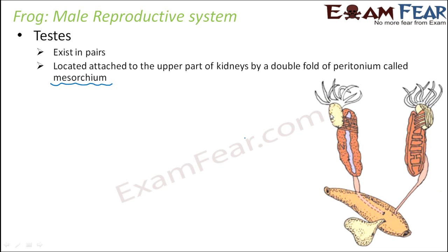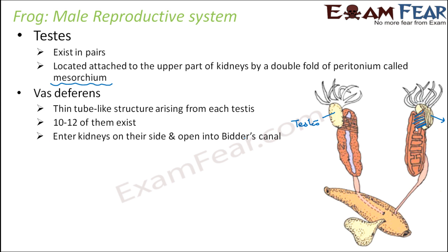In the diagram you can see the testes exist in pairs, located in the upper part of the kidneys, connected to the kidneys by this double fold of peritoneum. This connecting structure is called the mesorchium. That is the location of the testes.